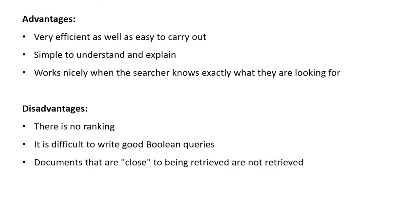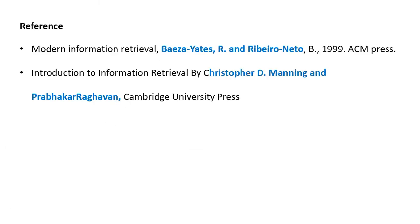Another disadvantage is that documents that are close to the query may not be retrieved — we may feel a document is very close to the query, but with a strict AND/OR combination it may not match. Those are the disadvantages of the Boolean model. This is all about the classical Boolean model. The information for this presentation was referenced from two books: 'Modern Information Retrieval' and 'Introduction to Information Retrieval.' In the next video I will cover the vector model. Thank you.